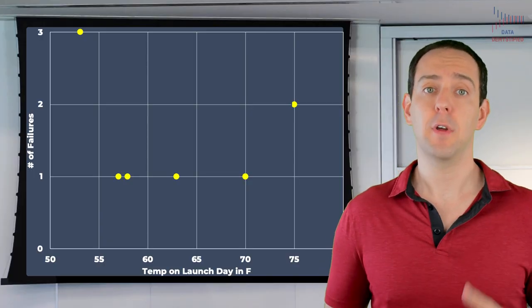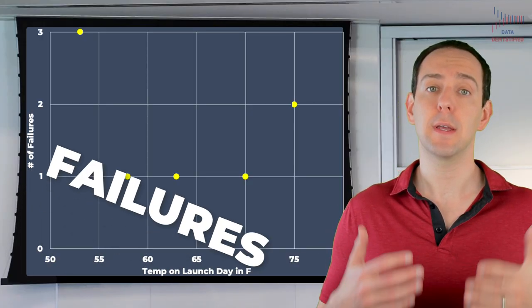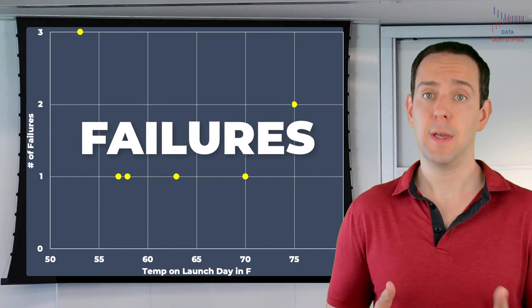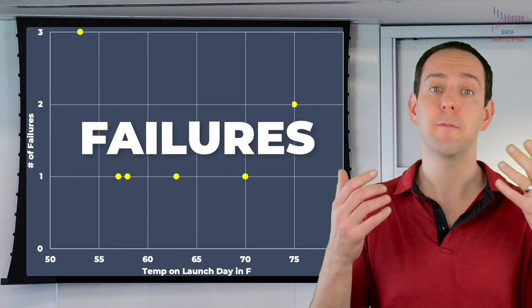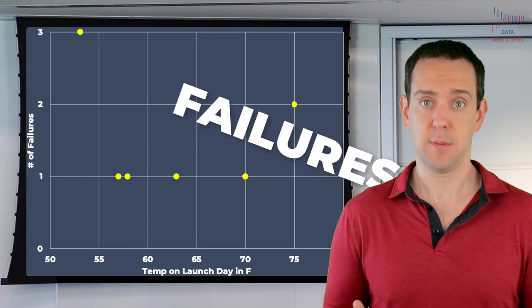With that said, let's explore the second major error that Thiokol and NASA engineers made. Again, coming back to this graph, what's critical to point out is that these data only include the failures. As in, this is plotting the relationship between failures and temperature, and not all launches and temperature.